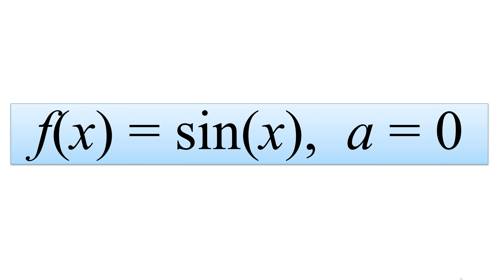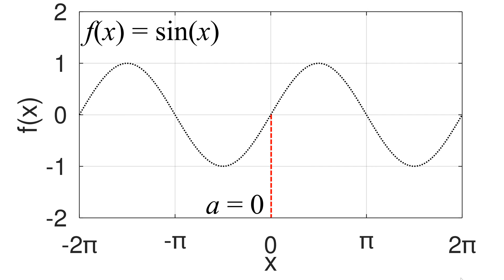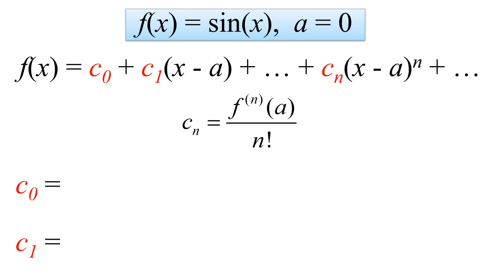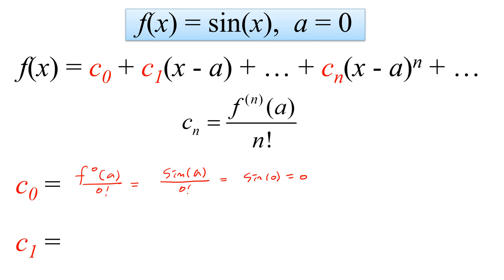Let's talk about A equal to 0 first. A equal to 0 means that we plan to expand the Taylor series at x equal to 0. We can start with determining c_0. Based on the formula, we have the 0th order derivative at x equal to 0 and factorial of 0. The 0th derivative is sin(x) itself, so we are dealing with sin(A) divided by factorial of 0, which is 1. This is the same as sin(0), which equals 0. So c_0 equals 0.